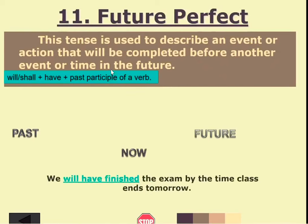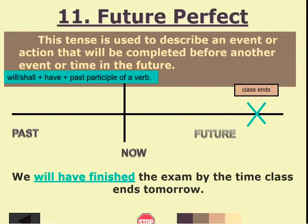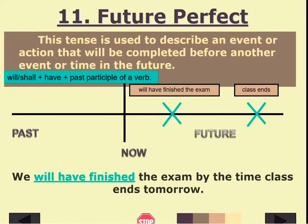Next is the future perfect tense. This tense describes an event or action that will be completed before another event or time in the future. Example: 'We will have finished the exam by the time class ends tomorrow.' The pattern is 'will' or 'shall' plus 'have' plus the past participle of the verb. In future perfect tense, we always use 'have' regardless of whether the subject is singular or plural.